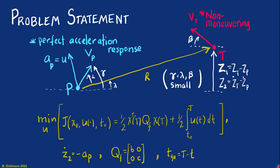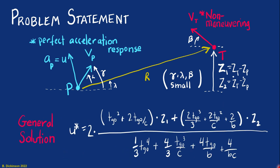The optimization problem statement that we solved was to find the control that minimized the cost function subject to the kinematics, where we define the terminal cost matrix QF as B and C on the diagonal. A time-to-go variable was also introduced. The general solution is a feedback law based off of the kinematic states z1 and z2, with parameters B and C from the terminal cost matrix and the independent variable time-to-go.